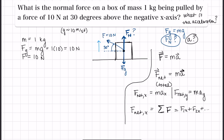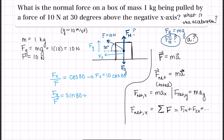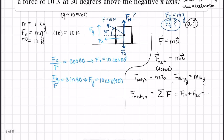I'll draw the components in light blue — F_y and F_x. Using SOHCAHTOA rules: F_x over F equals cosine 30, so F_x equals 10 cosine 30. And F_y over F equals sine 30, so F_y equals 10 sine 30. I'll just leave those expressions for now — we don't need a final number right away.